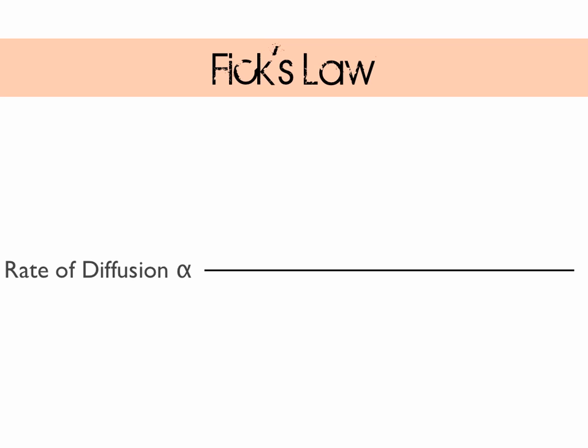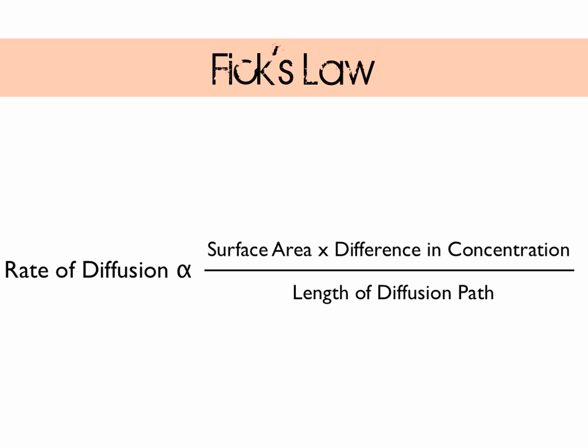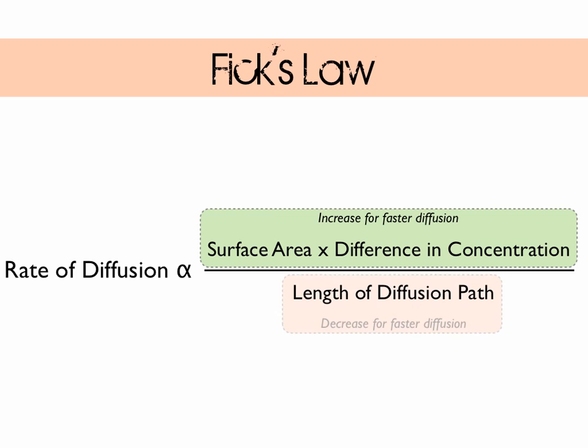Let's briefly revisit Unit 1 and look at Fick's law. We know that the rate of diffusion is proportional to the surface area of the exchange surface multiplied by the difference in concentration, and all of that is divided by the length of the diffusion pathway. If we increase any of the factors on the top of the equation — surface area and difference in concentration — this results in faster diffusion. Conversely, if we decrease the factor on the bottom, this will lead to an increase in rate of diffusion too. This all relates to the exchange surfaces: larger surface area, a thin diffusion pathway, keeping the concentration gradient as large as possible by moving the environment and the internal transport system through or across the surface. All really useful, all really important.